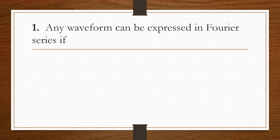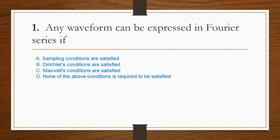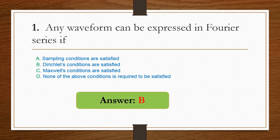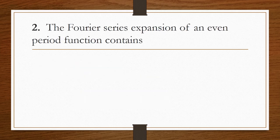First question. Any waveform can be expressed in Fourier series if: option A, sampling conditions are satisfied; option B, Dirichlet's conditions are satisfied; option C, Maxwell's condition; and option D, none of the above conditions. We know for the Fourier series to exist, it should satisfy Dirichlet's condition. So option B is the right answer.